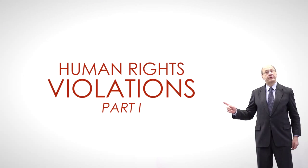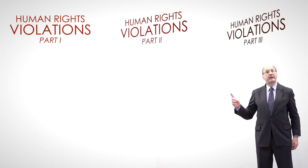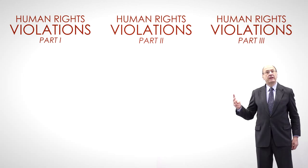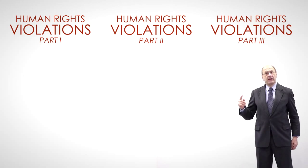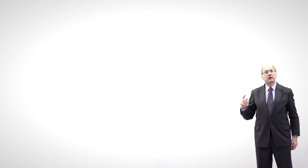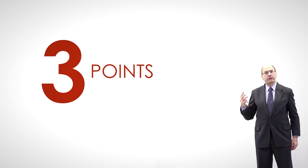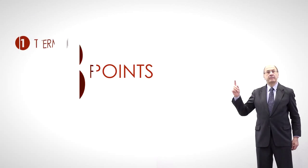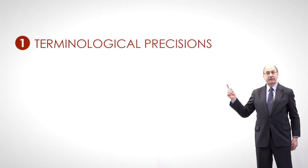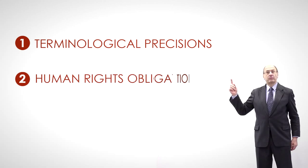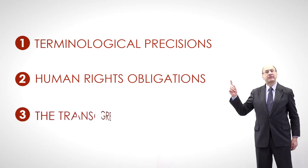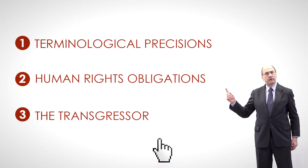This is the first of three lessons devoted to the issue of human rights violations. In this class, we will cover three points: terminological precisions, human rights obligations, and the transgressor.